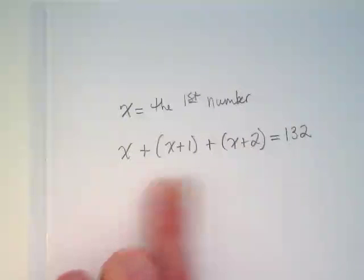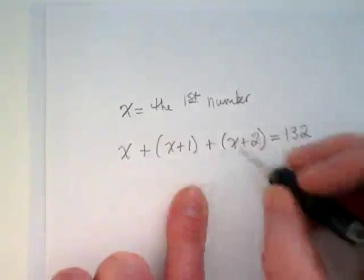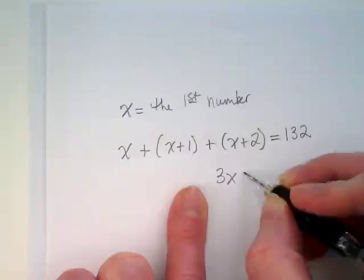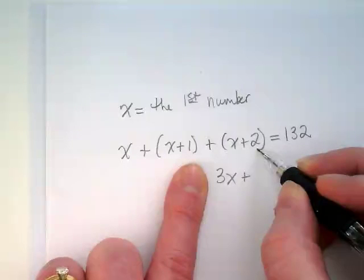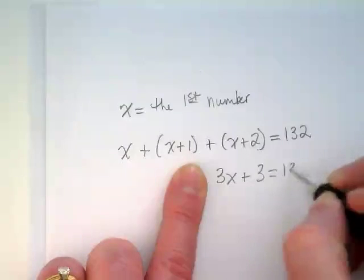How many total X's are there? So now we've got the equation written and we can combine like terms. We get 3X plus what? 1 plus 2 would be? 3. Equals 132.